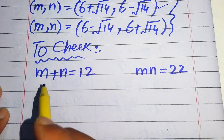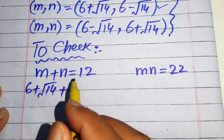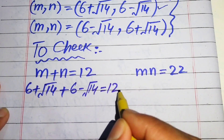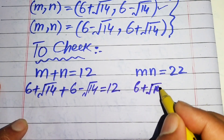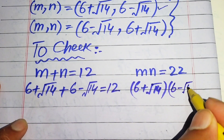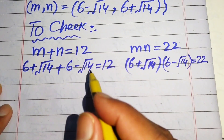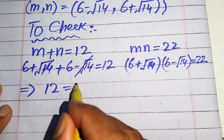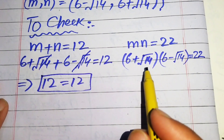Substituting the first solution into equation 1: (6 plus square root of 14) plus (6 minus square root of 14) equals 12. The square root terms cancel, and 6 plus 6 equals 12, which confirms 12 equals 12. The first solution satisfies equation number 1.